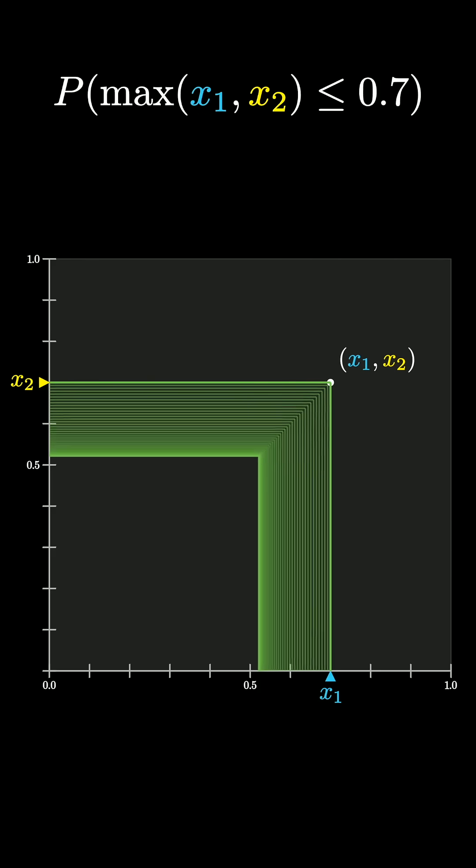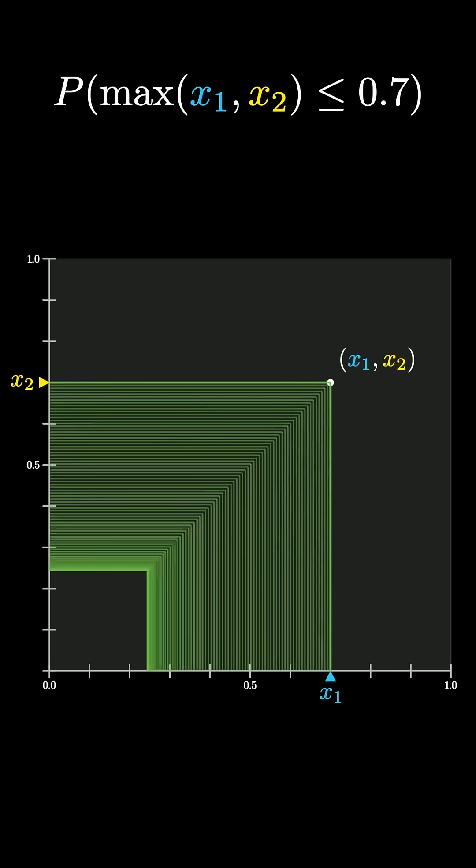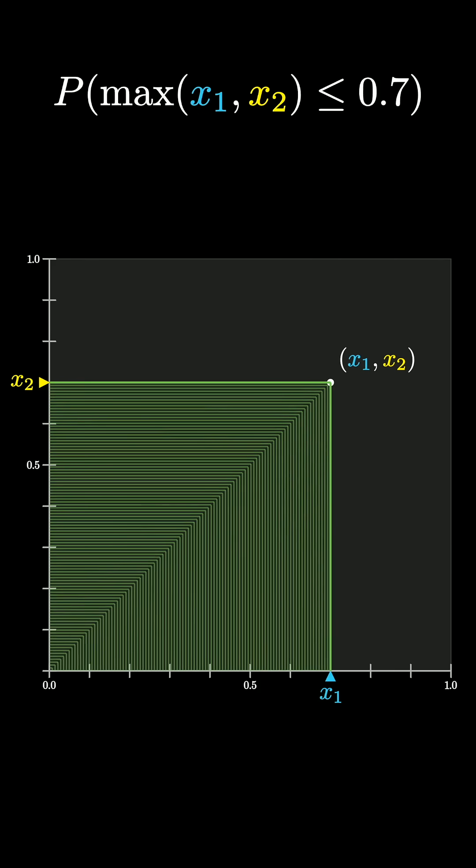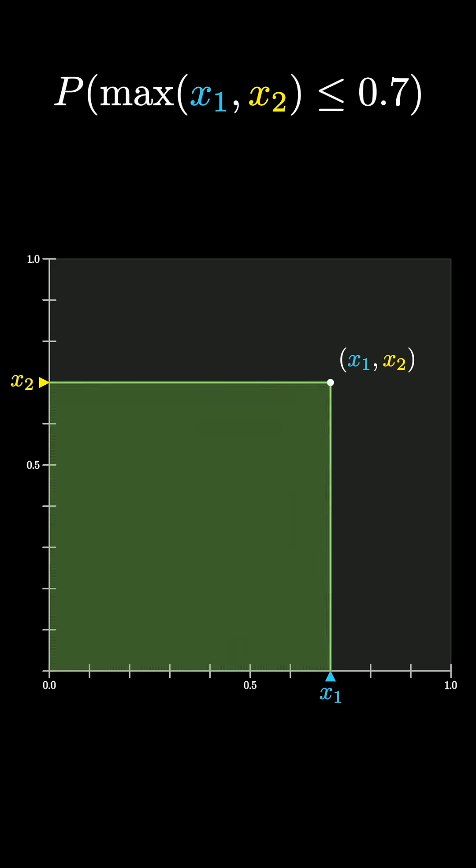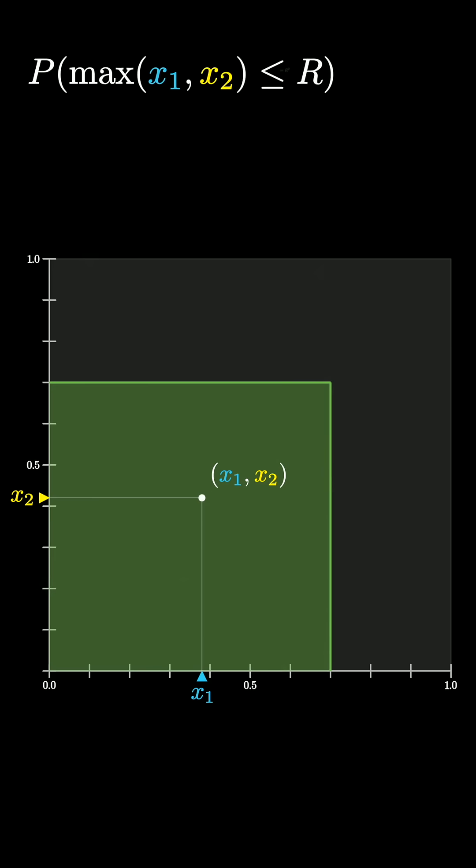In this case, what it looks like to be less than or equal to, say 0.7, is that you fall somewhere inside this square here. And so because everything is uniform, the probability of landing in that region is the area of that region. And in general, the probability that this maximum is less than some number r looks like r squared.